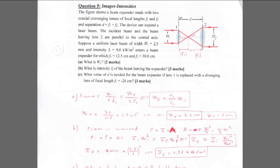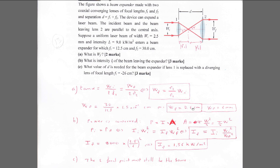For part 2C, find the distance d between the two lenses needed for the beam expander if lens 1 is replaced by a diverging lens with focal length f1 equals minus 26 cm. You need to figure out how to still get a parallel output beam given a parallel input beam.